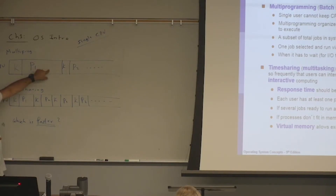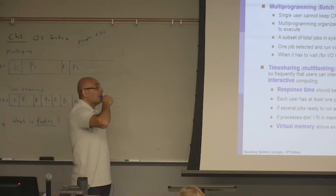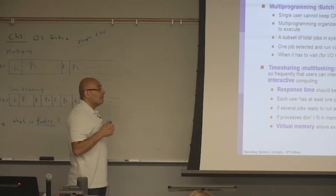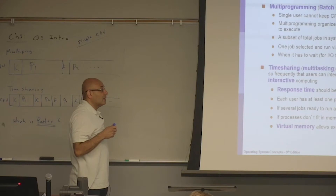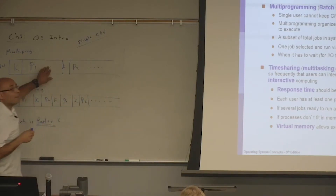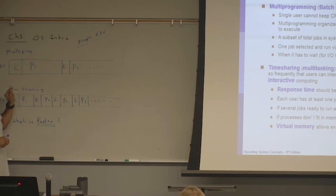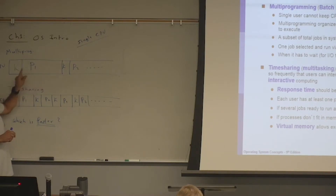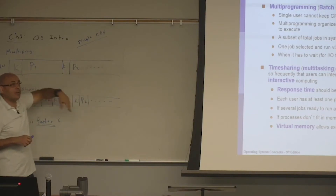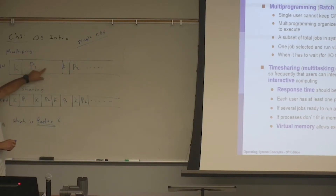What's the argument that multiprogramming is faster? A student answers: a single process finishes faster on multiprogramming than time-sharing — P1 finishes faster. In fact, not only P1 — if you ask what's the total time needed to execute a given set of processes, say P1 and P2, what's the total time needed to finish both here?